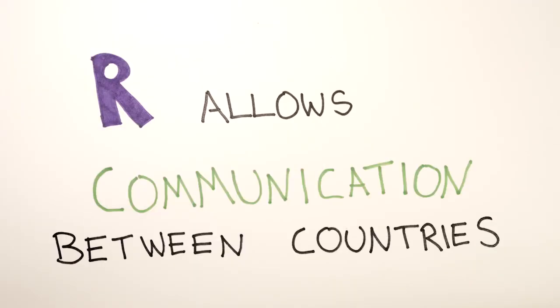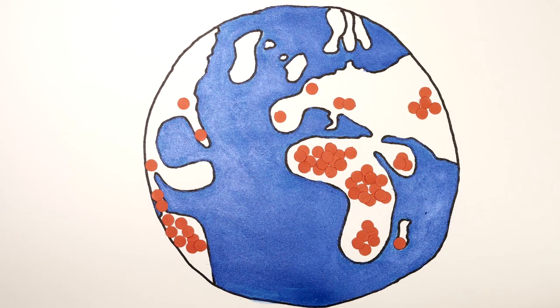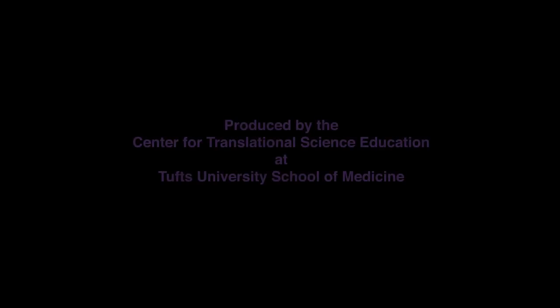The R-number provides a way for different countries to communicate with each other about how a disease is spreading. Then we can work to address the most dangerous diseases, like Ebola.